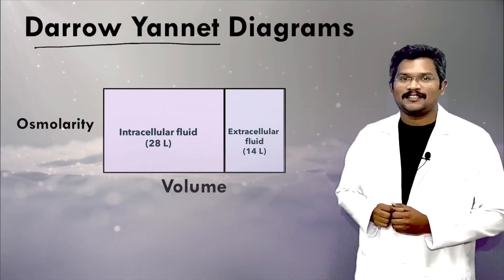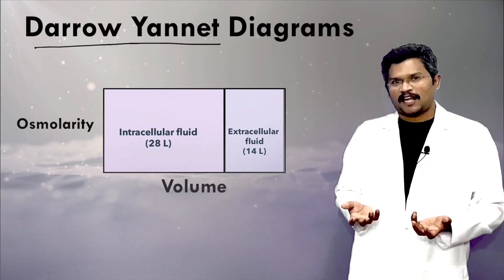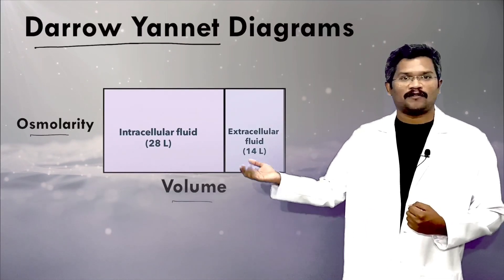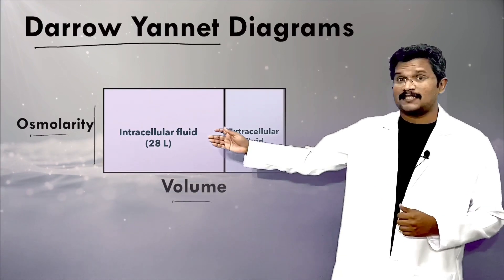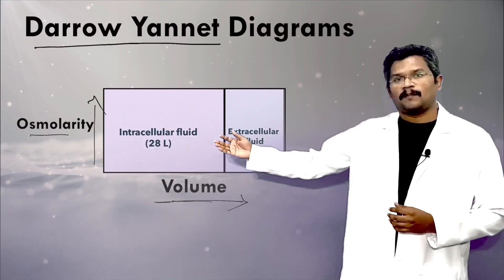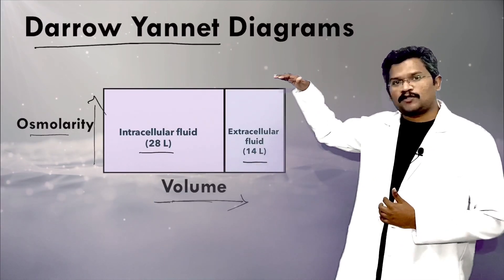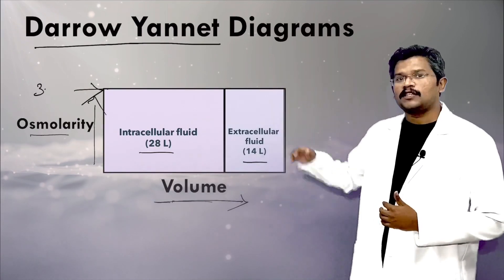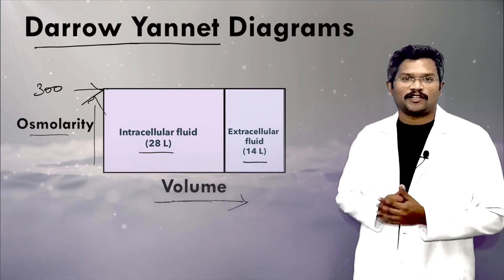Darrow A-Net Diagrams are simple graphs which help us to visualize and understand the changes in the osmolarity and the volume of the body fluid compartments. The y-axis is the osmolarity and the x-axis is the volume. Both compartments — intracellular and extracellular — are shown here. Both have the same osmolarity of approximately 300 milliosmoles, and the intracellular volume is slightly larger than the extracellular compartment.